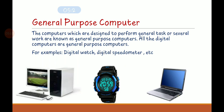General purpose computers are computers designed to perform general tasks or several kinds of work. All digital computers are general purpose computers. For example, digital watches, desktop computers, and digital speedometers are examples of general purpose computers. They are also called digital computers.